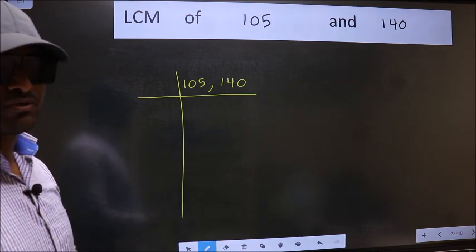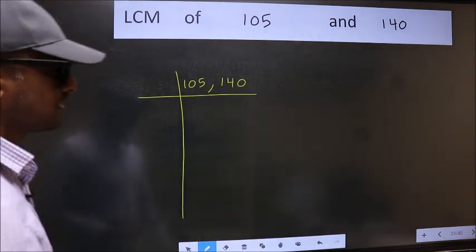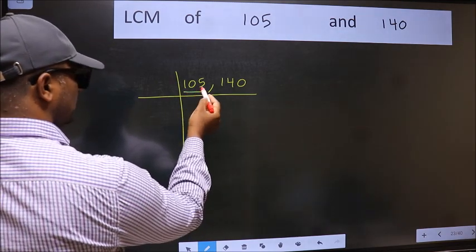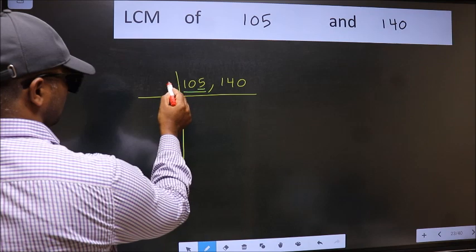Now you should focus on the first number which is 105 here. In this number, last digit is 5. So take 5.